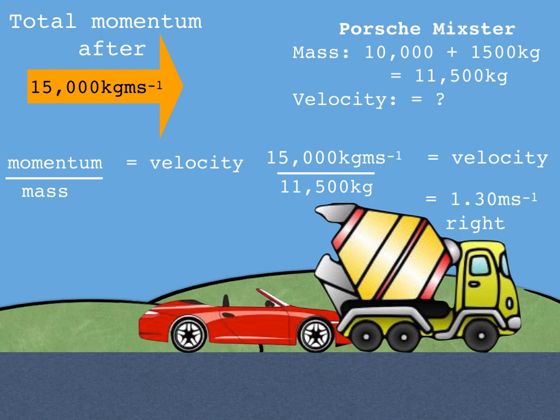Earlier on we said that momentum was conserved provided no external forces act. Now in any example you get you're very unlikely to have to consider external forces but imagine for example that this cement mixer had its handbrake on. When the Porsche hits it they're both still going to move to the right but they're not going to move as fast as we've calculated because there would be an extra force from the handbrake slowing them both down.